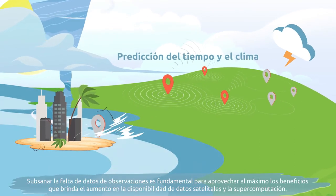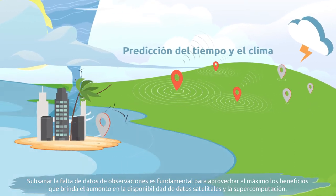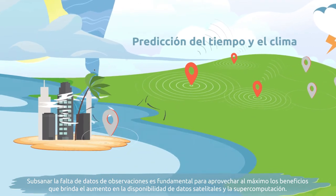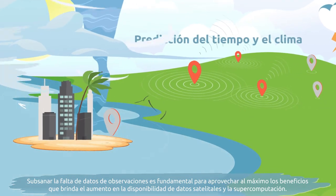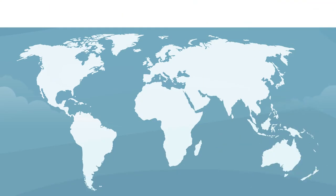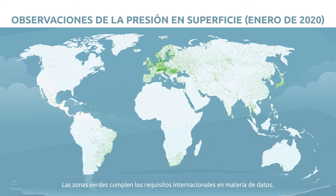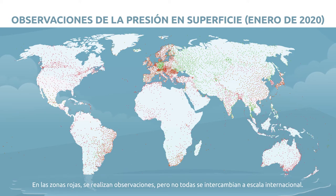Filling the observational data gaps is critical to maximize the benefits of increasingly available satellite data and supercomputer technology. This map of surface pressure observations illustrates the status of international data exchange in January 2020. The green areas are meeting the international data requirements. In the red areas, the observations exist, but not all are being shared internationally.